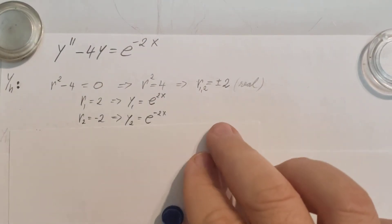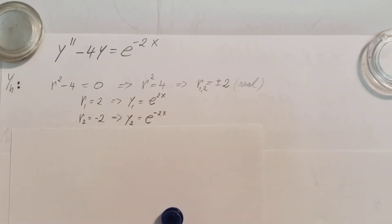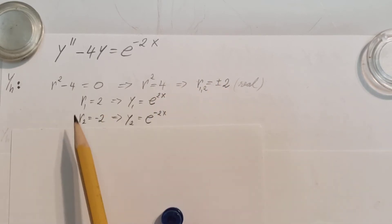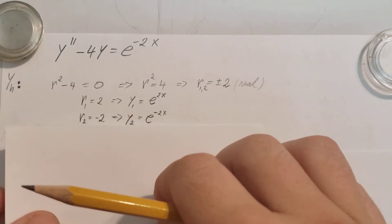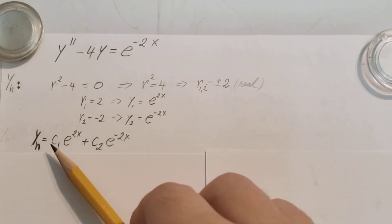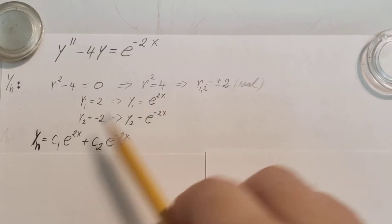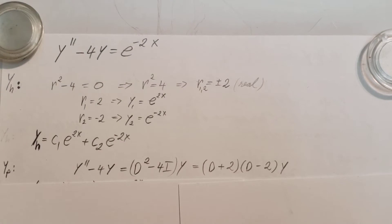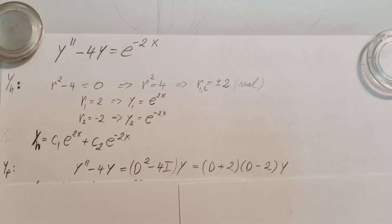From this I can find my components for the solution — y1 and y2. r1 equal to 2 will give me e to the 2x, and r2 equal to negative 2 will give me y2 equals e to the power of negative 2x. Now let's go ahead and construct our homogeneous solution: c1 times y1 plus c2 times y2. Unfortunately we're not done, because we have a function on the right-hand side as well.